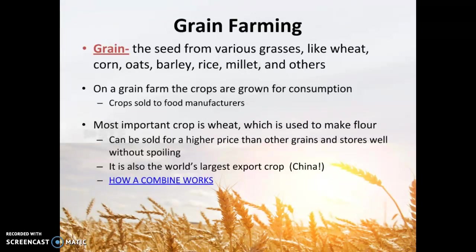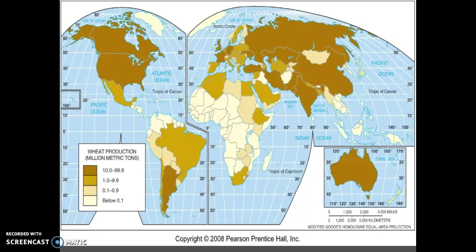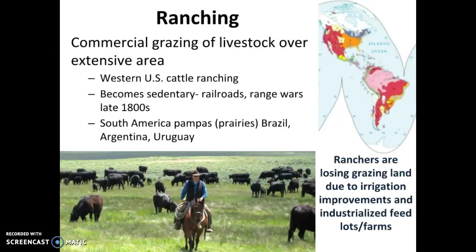Grain farming relies heavily on mechanization and machines. To buy a combine costs roughly half a million to a million dollars depending on the technology, but it speeds up the process so you can farm more land. Grain farming takes up a lot of land, so it's not going to be located close to the city center, and since it doesn't spoil you don't have to worry about that. Looking at wheat production, you can see China, Russia, India, Australia, the United States, Argentina, and others are high in wheat production.